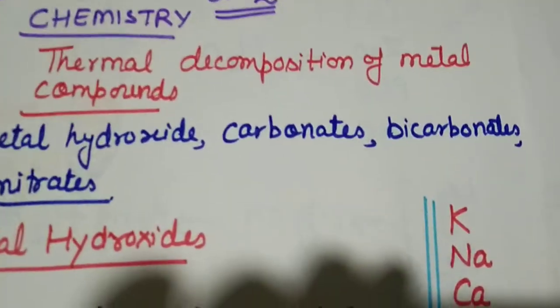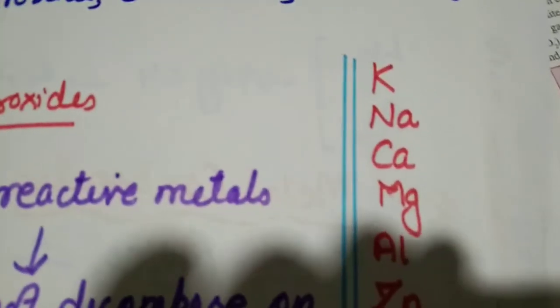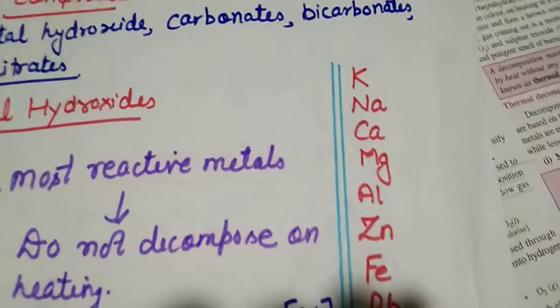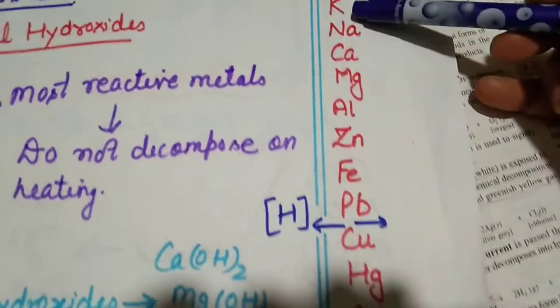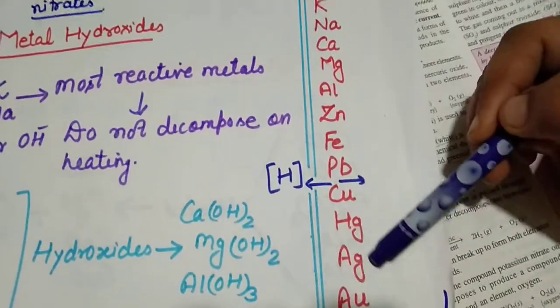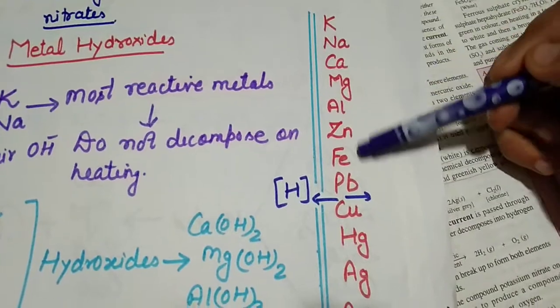Before explaining their decomposition, let me have a look at the electrochemical series of metals. So this series is called the electrochemical series of metal.